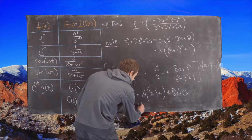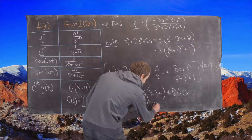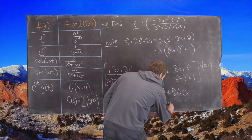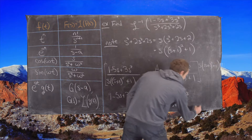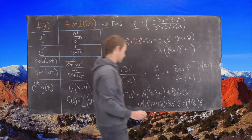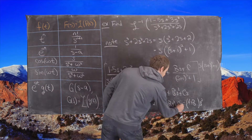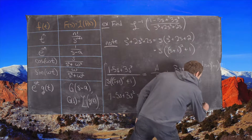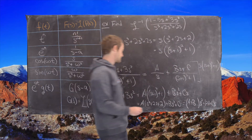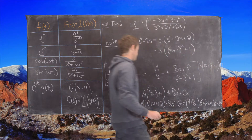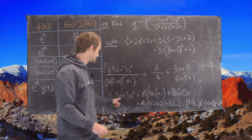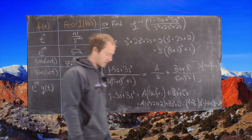Multiplying out, we get A times s squared plus 2s plus 2, plus Bs squared plus Cs. Collecting terms: the s squared coefficient is A plus B, the coefficient of s is 2A plus C, and the constant term is 2A. So we have quantity A plus B times s squared, plus quantity 2A plus C times s, plus 2A.